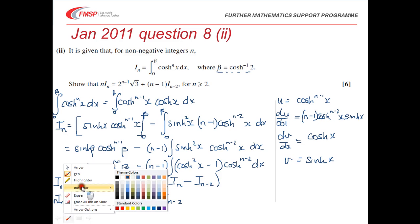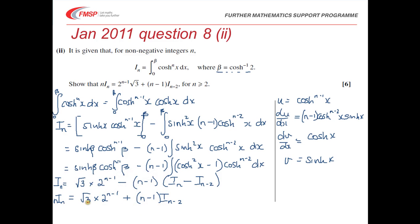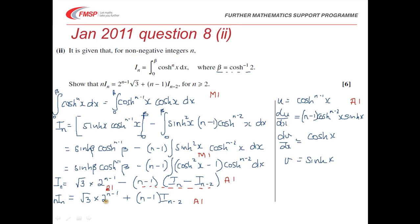There were 6 marks for part 2: a method mark for the splitting trick, an accuracy mark for integration by parts, a method mark for replacing sinh squared with cosh squared minus 1, a mark for substituting cosh to the n minus 1 of beta correctly, and two accuracy marks for completing the derivation.